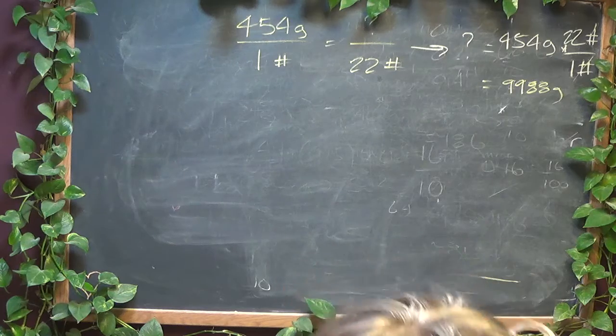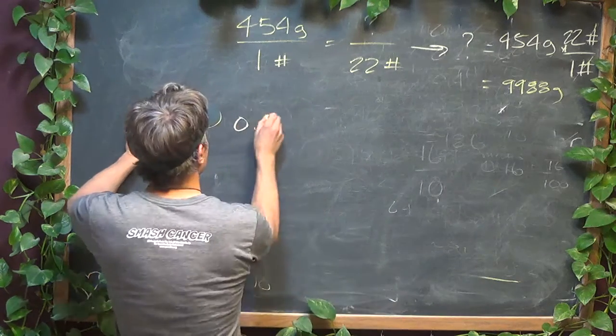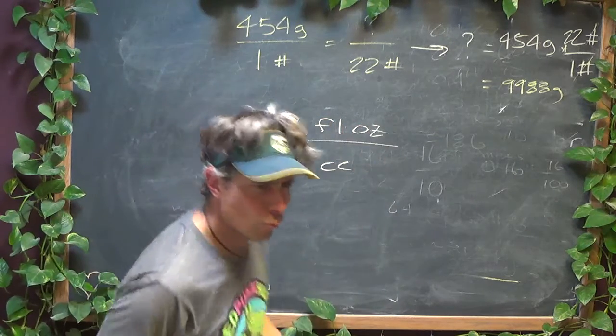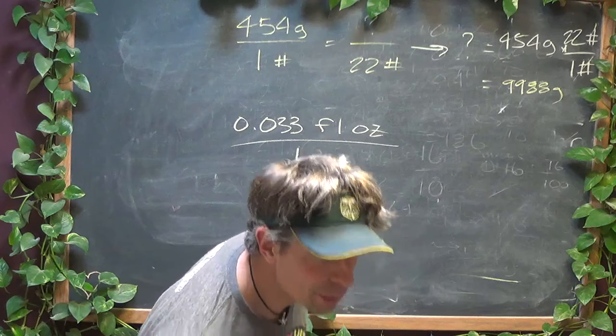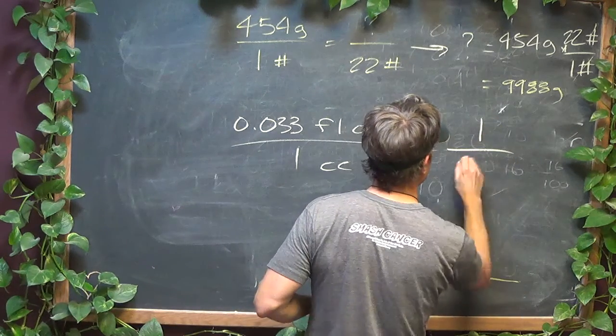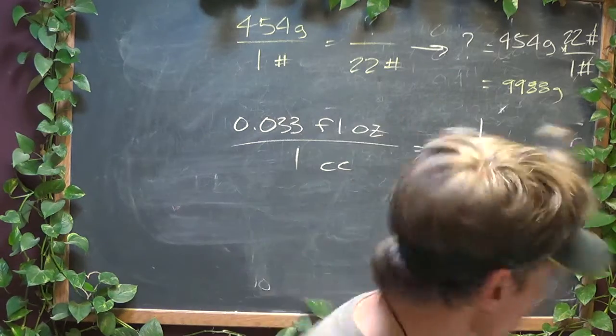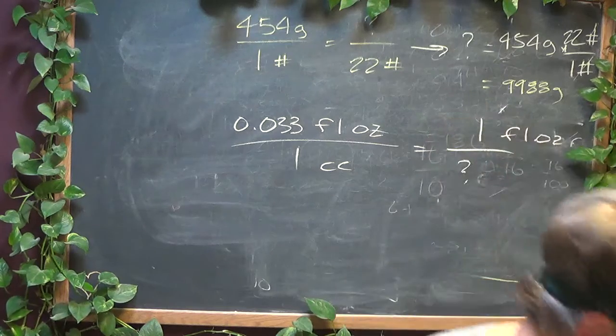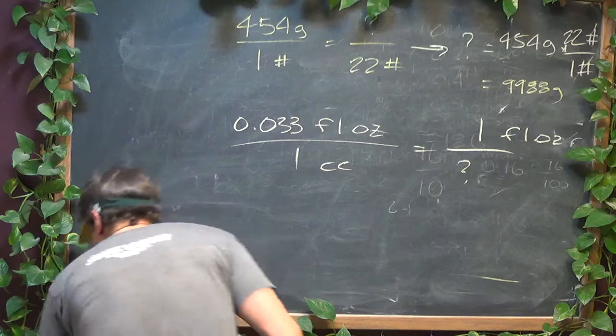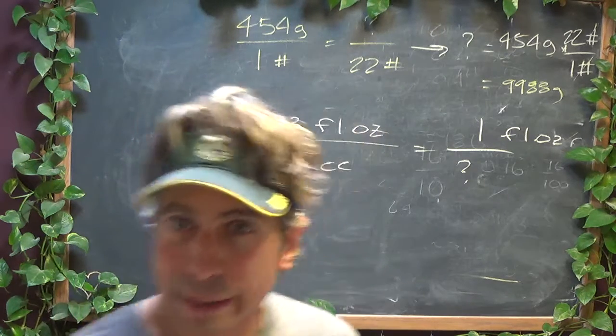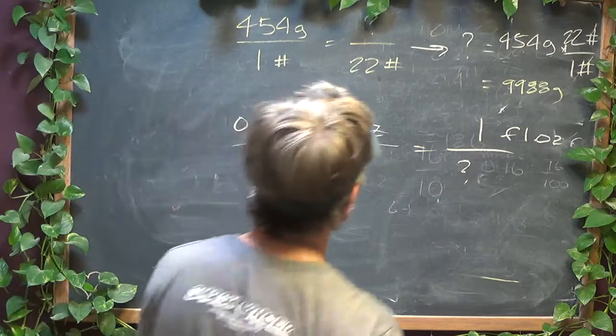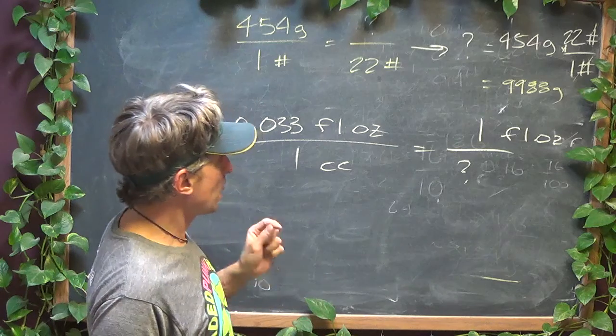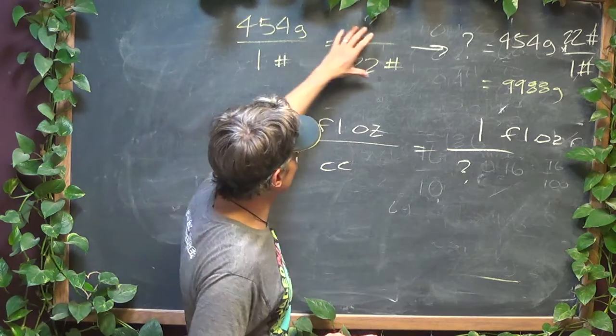All right. And last but not least, there are 33 thousandths fluid ounces, that is a weird unit, in one cubic centimeter. Okay. How many cubic centimeters are there in one fluid ounce? So this one might have thrown you for a loop if you set it up like this, but not to worry.